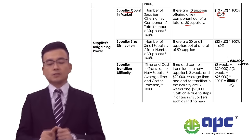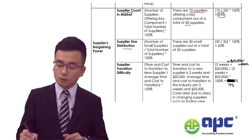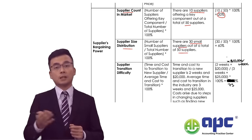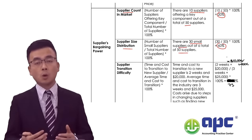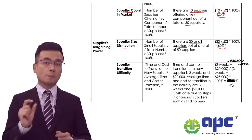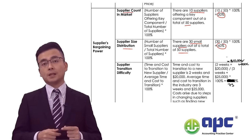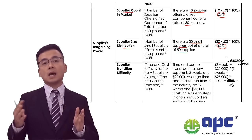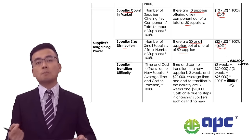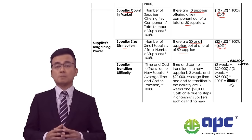We also look at supplier size distribution. Similar to buyer analysis, if 30 out of 50 suppliers are small — approximately 60% are relatively small — from a commercial point of view, we will likely owe money to small suppliers, creating payables. However, from an ethical and practical point of view, we shouldn't owe too much or for too long, as it will certainly impact our reputation.